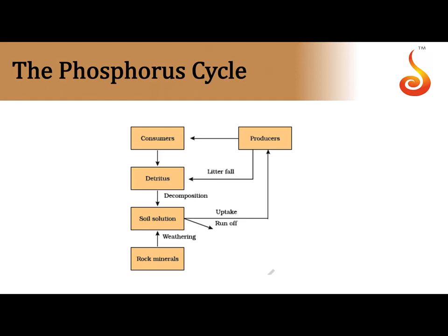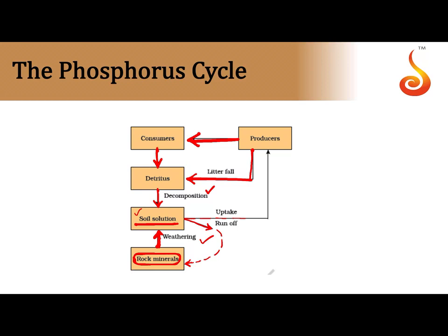In the phosphorus cycle, producers use phosphorus from the soil solution. Phosphorus reaches the soil from rock minerals by weathering. From producers, phosphorus passes to consumers, then to detritus upon their death, and is returned to the soil solution by decomposition. Some phosphorus in soil solution may run off and may or may not return to rock mineral sediments. Rock minerals act as both a reservoir pool and a cycling pool.